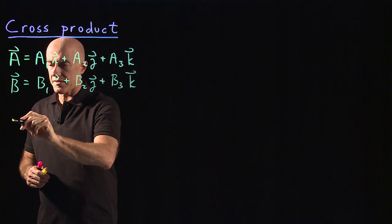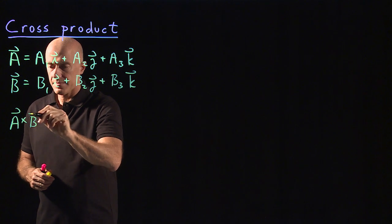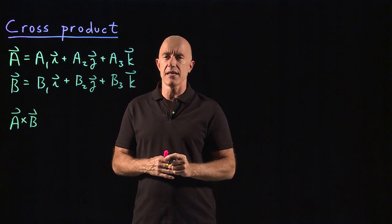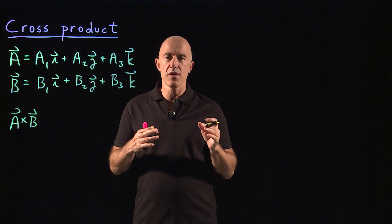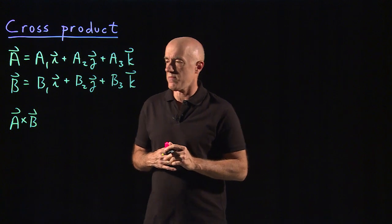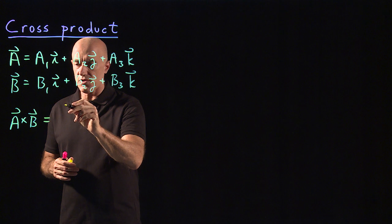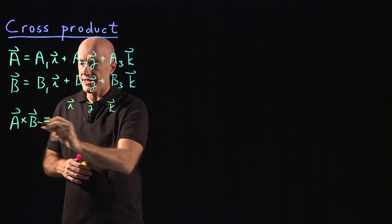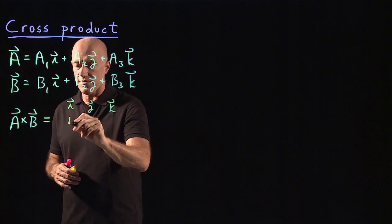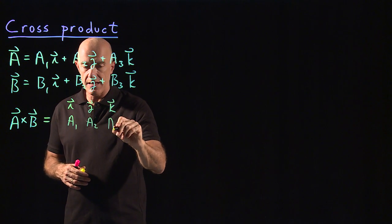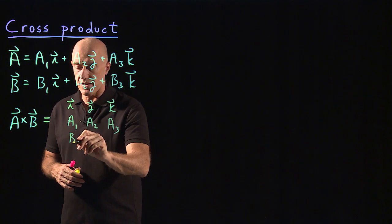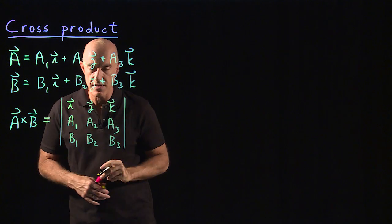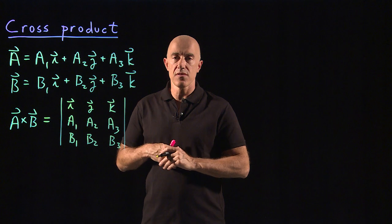I want to form the cross product of a cross b. The cross product is a vector and it's quite a bit more complicated than the dot product. The way to remember what the vector is, is to use a 3 by 3 determinant. You write this where the first row of the determinant is the unit vectors i, j, and k. The second row of the determinant is the components of a: a1, a2, and a3. The third row of the determinant is the components of b: b1, b2, and b3. That's how you remember the cross product.